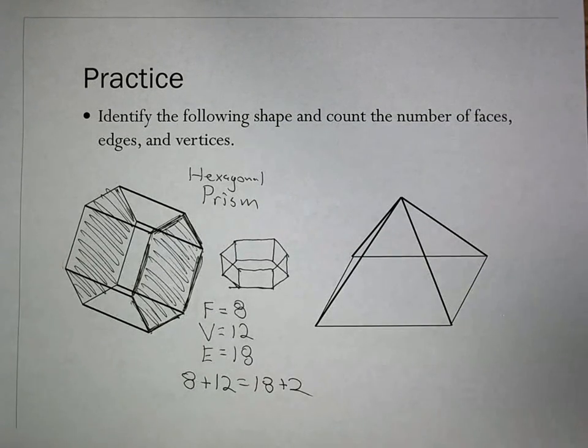And again, if you get an answer that doesn't match here, always look first. Did you switch vertices and edges? It's a very common error. And then go back and recount. Faces are the number of polygons you have, including the bases. Vertices are the number of corners, or where the lines meet, the intersections. And edges are the lines you've drawn.